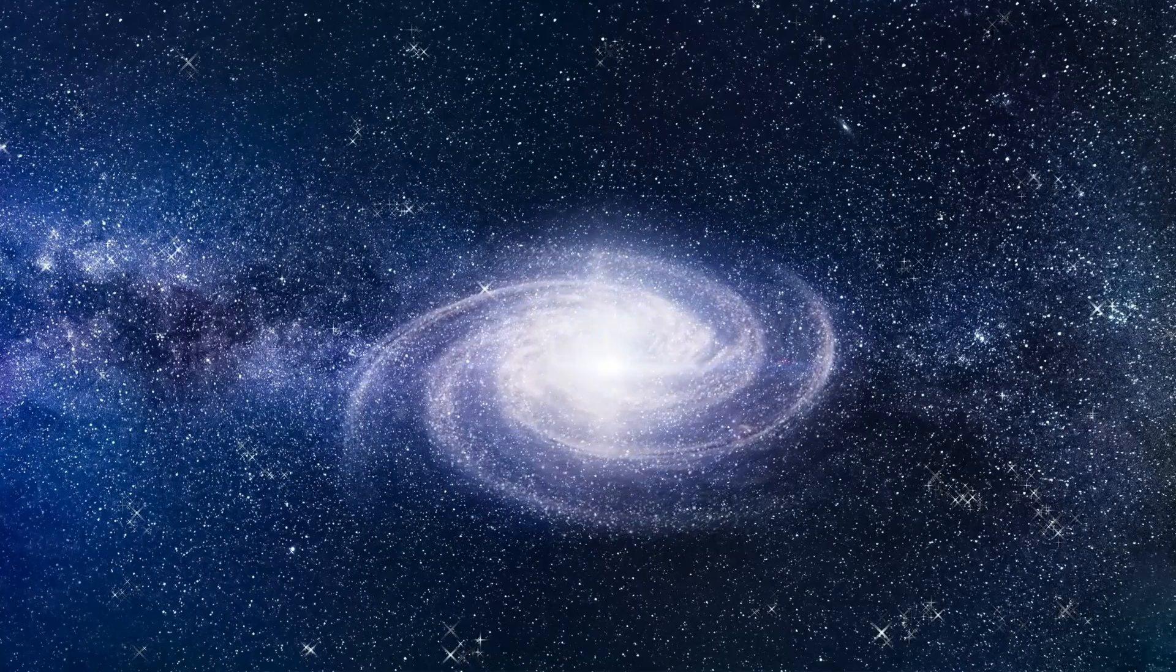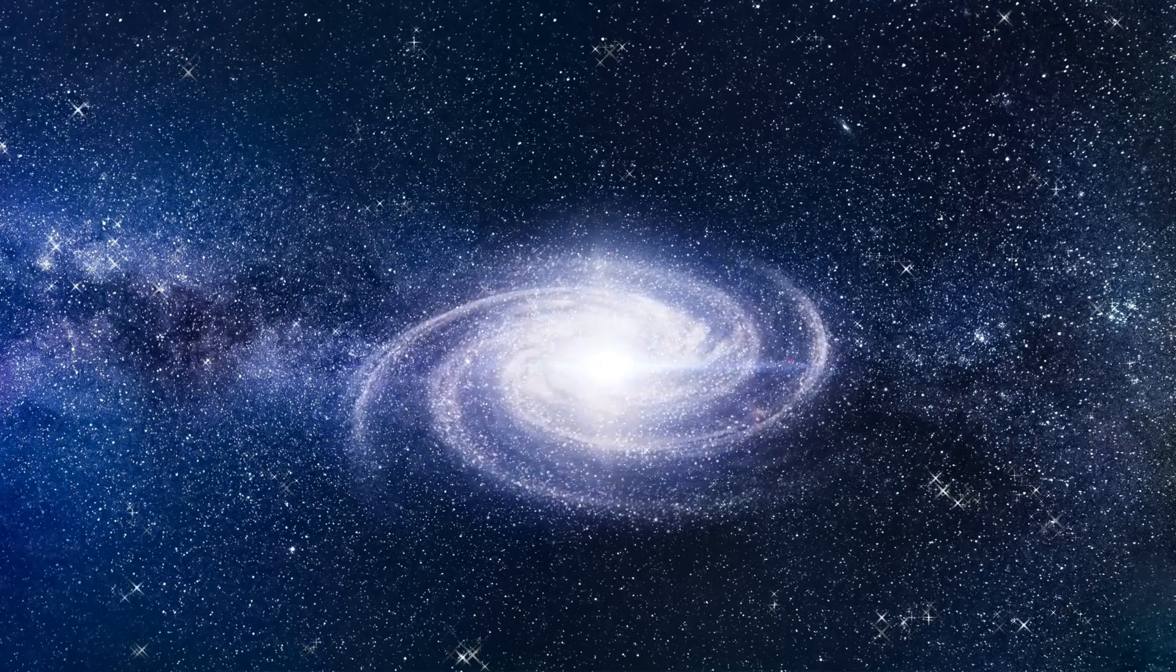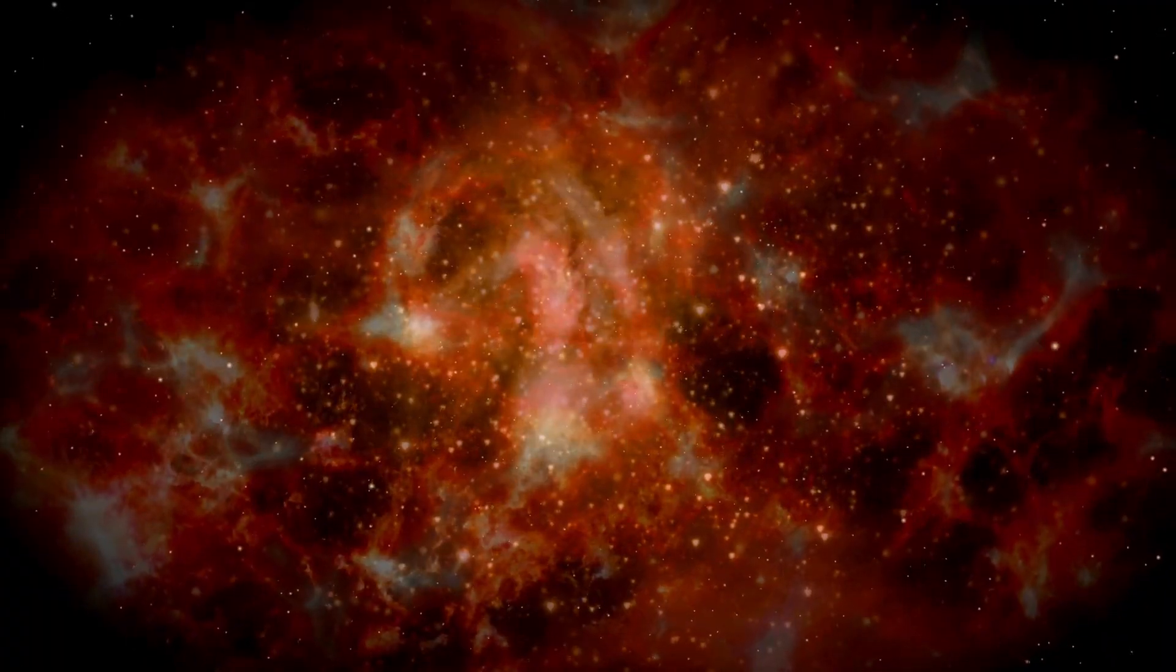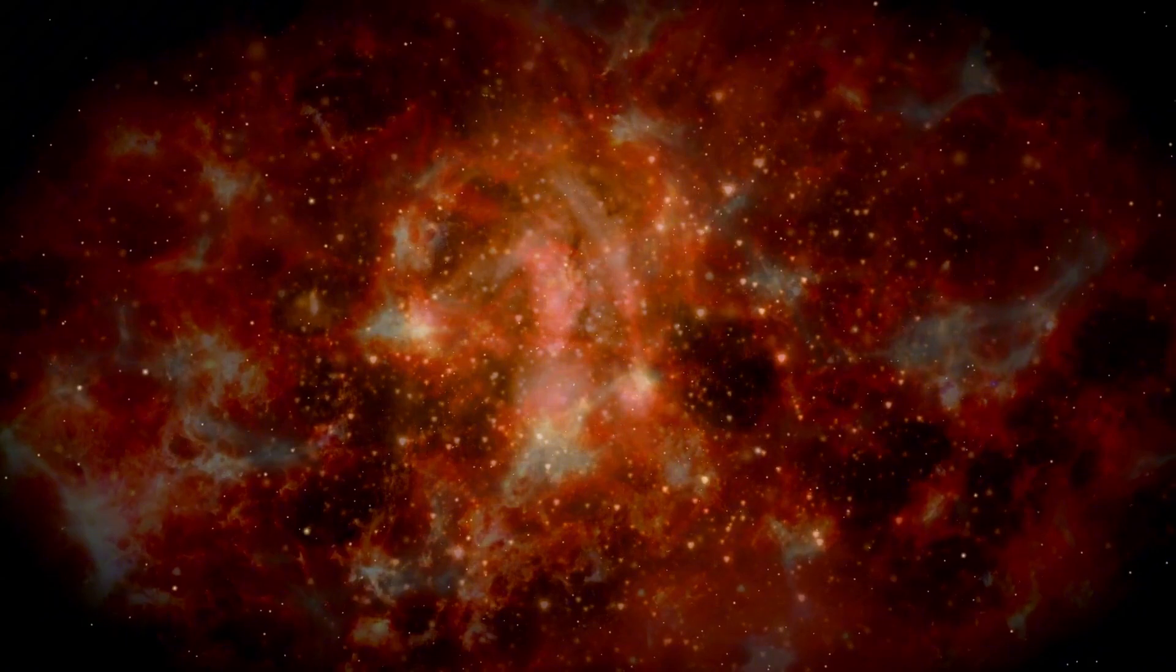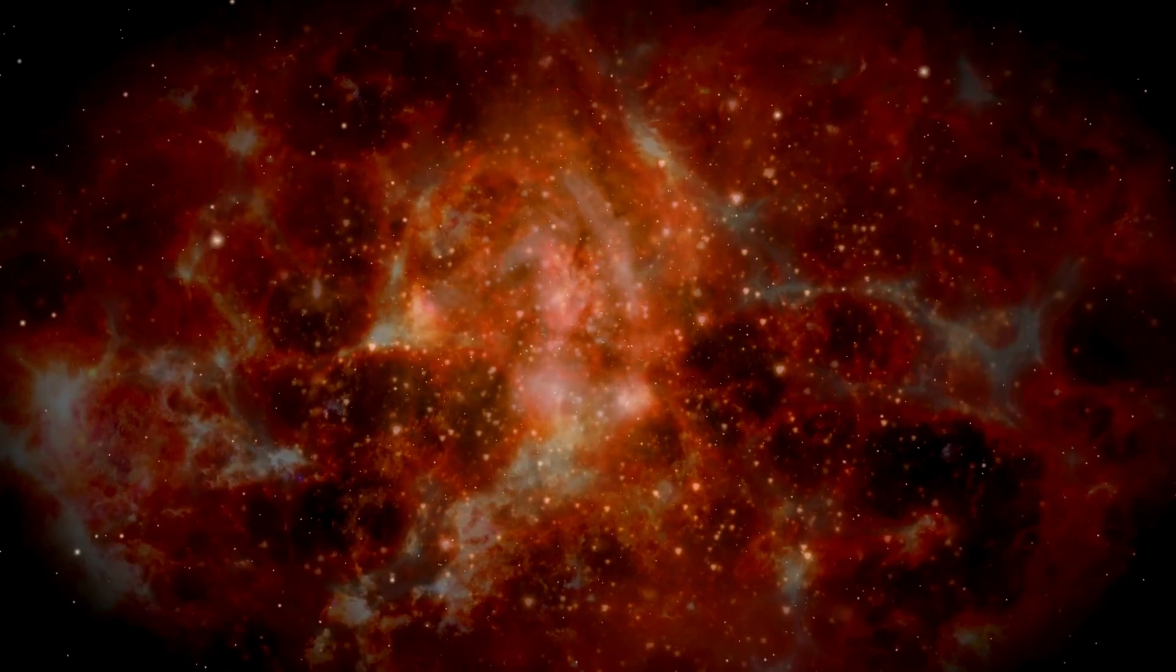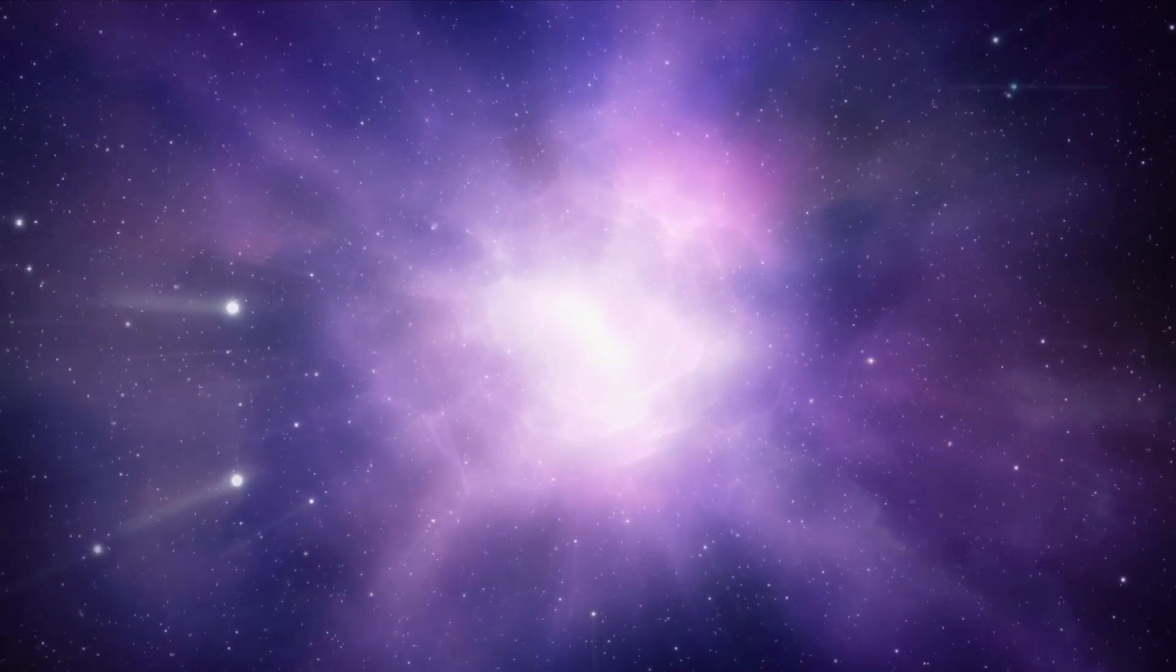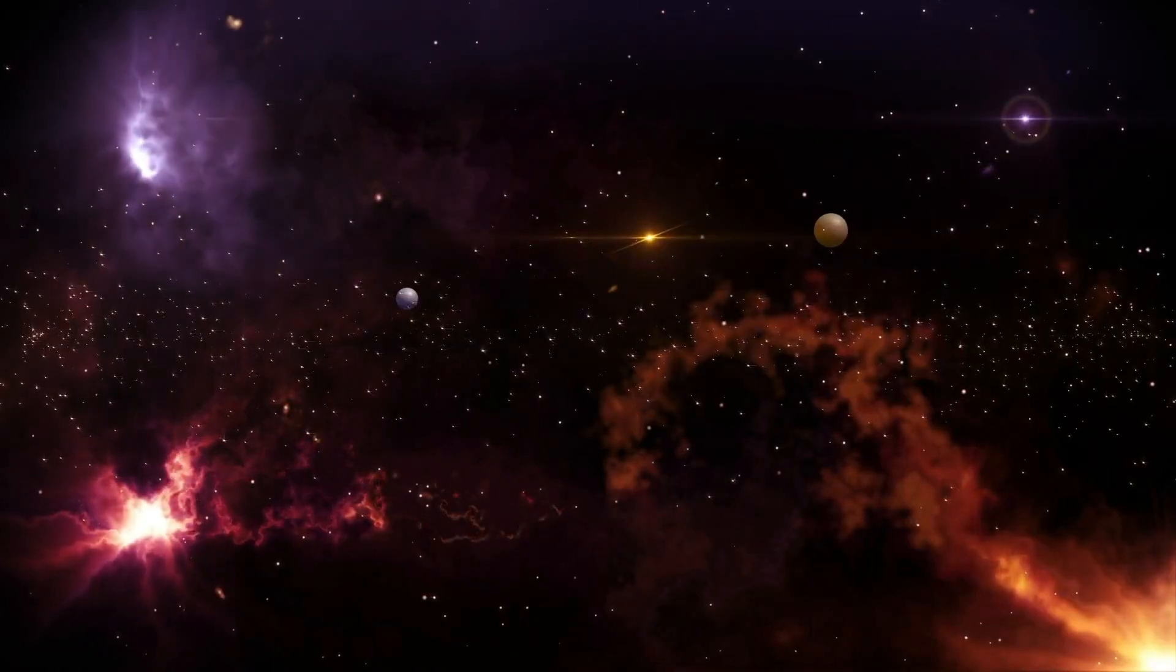The death of a red supergiant and its subsequent supernova explosion has profound implications for cosmic chemistry. When Betelgeuse eventually explodes, the heavy elements it has synthesized over its lifetime will be scattered into the galaxy. This distribution of elements plays a key role in the chemical evolution of the universe. It influences the composition of new stars and planetary systems, as well as the potential for life. By studying these processes, astronomers gain insights into the history of our galaxy and the conditions that led to the formation of solar systems and habitable planets.